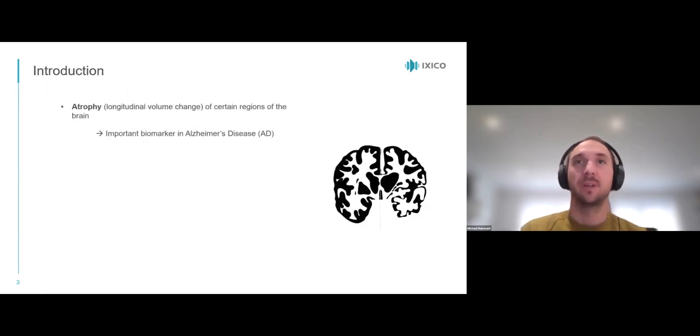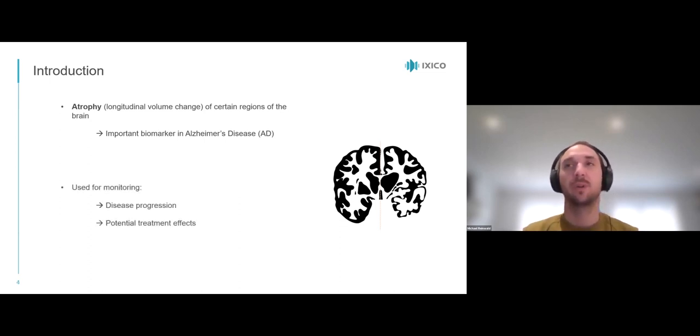First, a very quick introduction. Atrophy or longitudinal volume change of certain regions of the brain is an important biomarker in many neurodegenerative diseases and also Alzheimer's disease. These measurements are used to monitor disease progression and potential treatment effects in clinical trials.